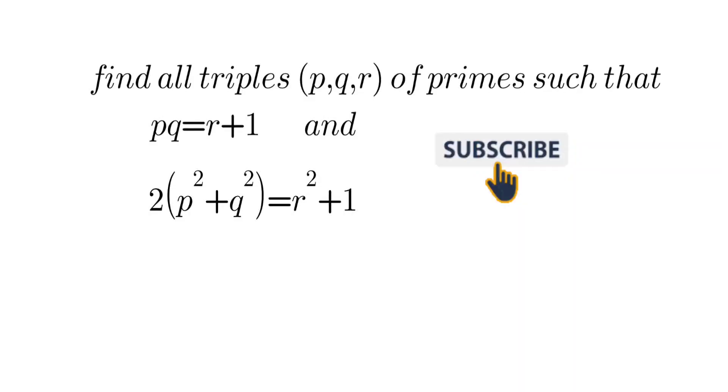Hello everyone, today we will solve this number theory problem where we have to find pqr, that is triples of primes, such that this two system of equations will be satisfied. So let's see how to do it.